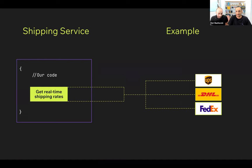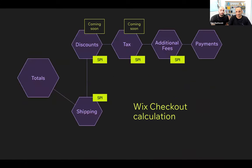Buyers will get different and versatile shipping options in their checkout. Today, in our checkout calculation flow, we calculate many things: shipping, discounts, tax, additional fees, and payments. We are exposing extension points to four of these steps — shipping, discount, tax, and additional fees.